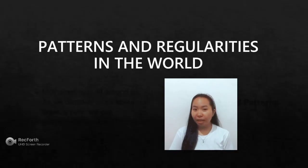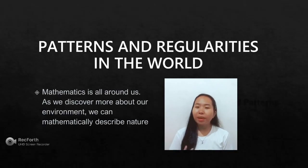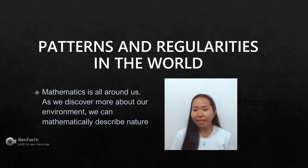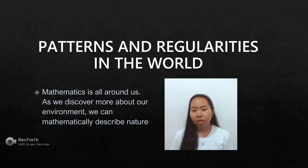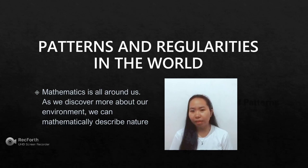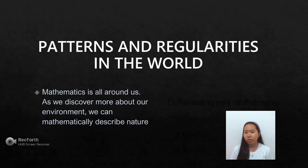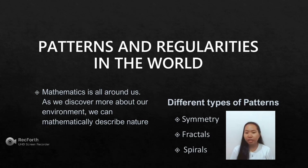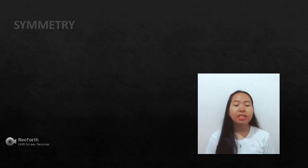Mathematics is all around us. As we discover more about our environment, we can mathematically describe nature — from the beauty of a flower, a tree, even rock formations, and at a microscopic level, snowflakes. In our everyday living, we encounter mathematics because mathematics is not just about numbers, but also includes shapes and patterns. There are different types of patterns: symmetry, fractal, and spiral.